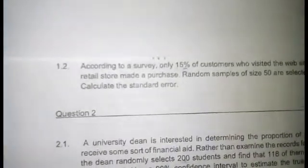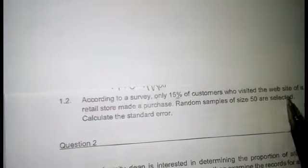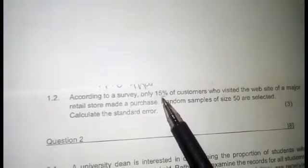The population proportion: only 15% of customers who visited the website of a major retail store made a purchase. So the population proportion is 15%, which converted to decimal is 0.15.